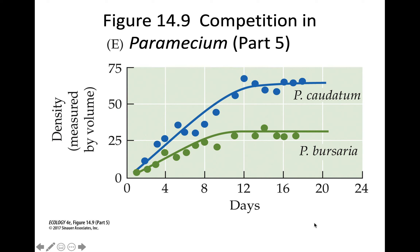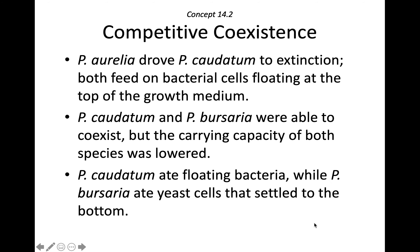We call this competitive coexistence. To summarize: P. aurelia drove P. caudatum to extinction because both feed on bacterial cells floating at the top of the growth medium — very strong competition. P. caudatum and P. bursaria were able to coexist, but the carrying capacity of both species was lowered, because P. caudatum fed primarily on floating bacteria while P. bursaria ate the larger yeast cells that settled at the bottom.